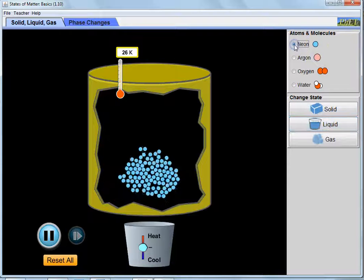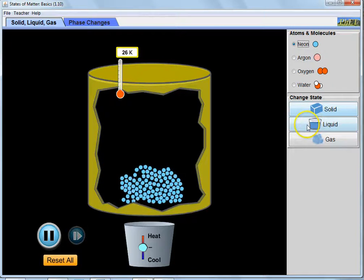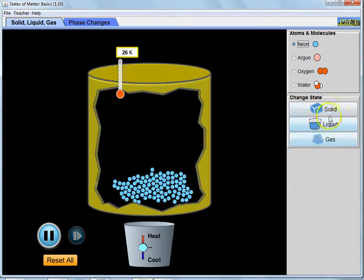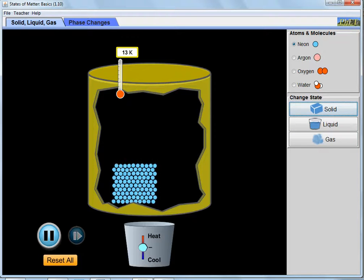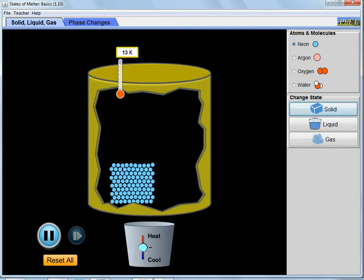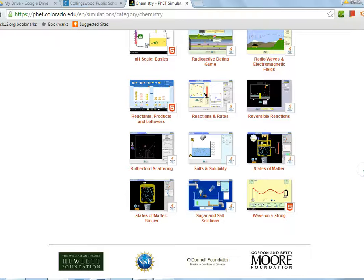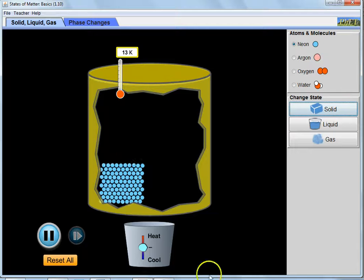So let's go to neon here real quick. This is solid neon. Notice here those particles are stuck together, they're slightly shimmying, but they're really not moving around too much. They are being bound together.